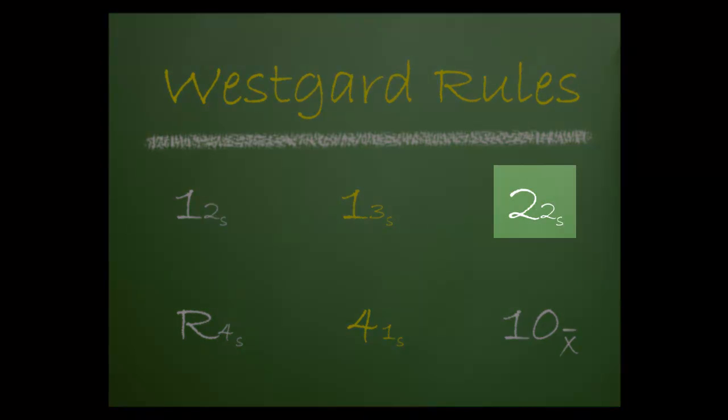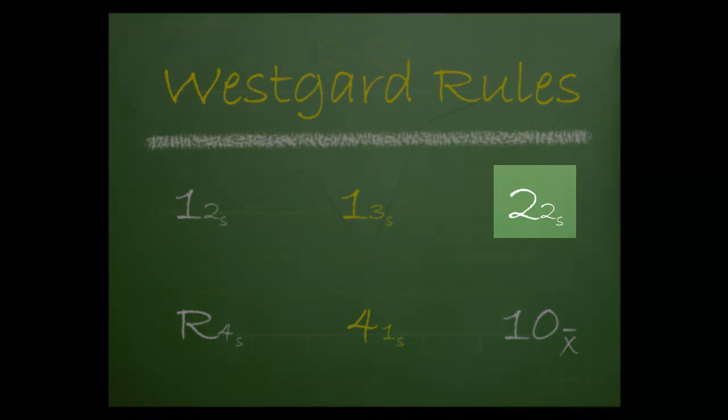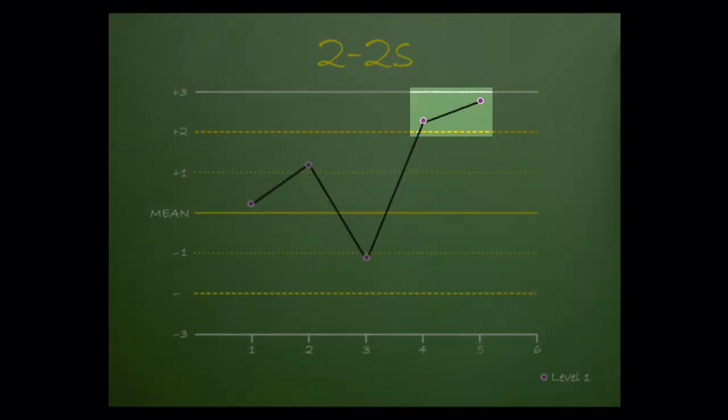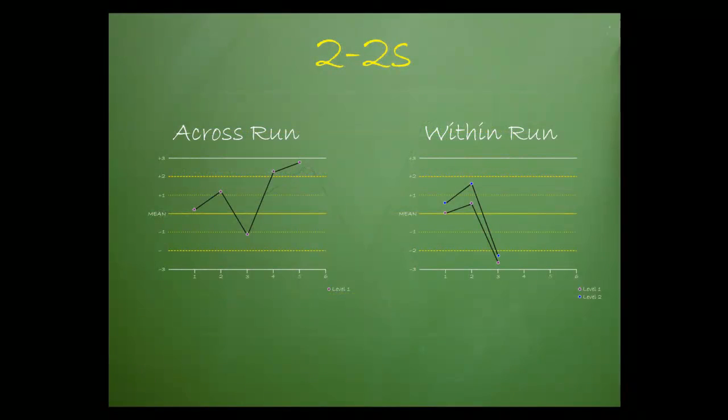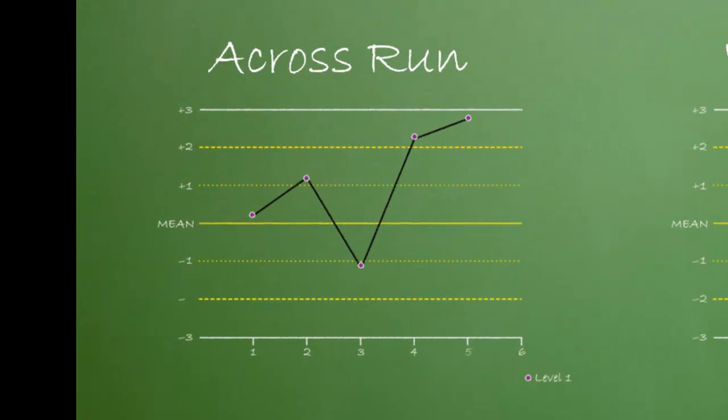2-2-S is the next rule we'll consider. This rule is violated when two QC results on the same side of the mean exceed two standard deviations. In our last example, we had two consecutive points that were out. However, we only used one level of control. We call this scenario a cross-run violation.